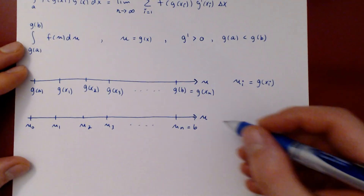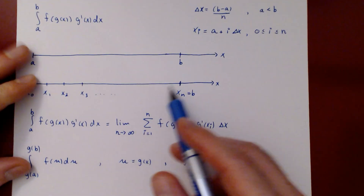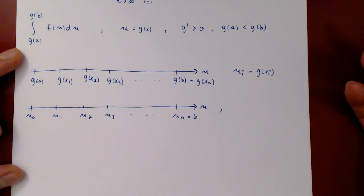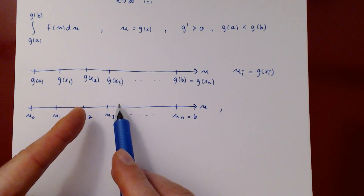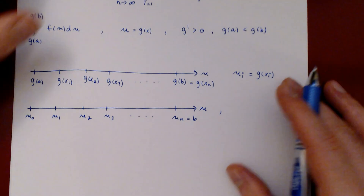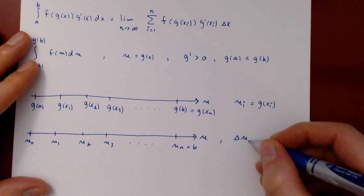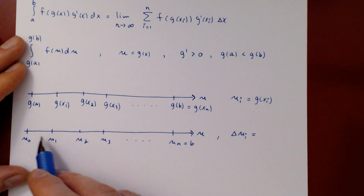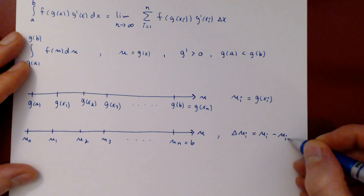Notice that the original partition along the x-axis was uniform, but g' does not have to be constant, so this inherited partition is not necessarily uniform. The length of each interval may vary, so we call it delta u_i, which equals u_i minus u_{i-1}.